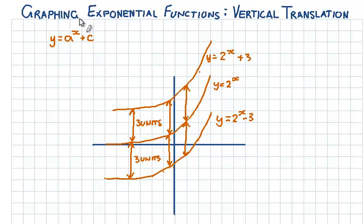Adding a constant term outside the power shifts the exponential function vertically. If that constant is increasing, the function shifts upwards. If the constant is decreasing, the function shifts downwards.